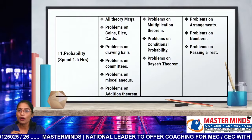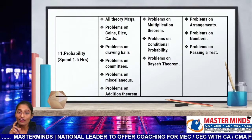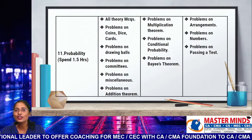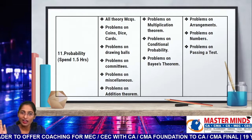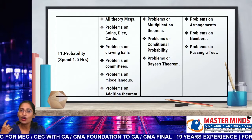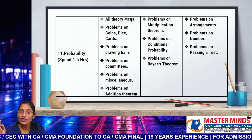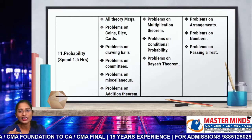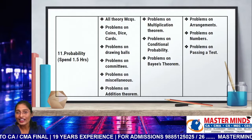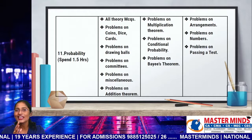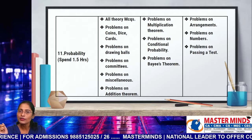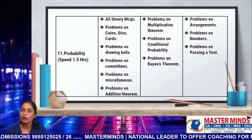The very last concept is Probability. Try to spend 1.5 hours on probability. Highest priority models: all theorem-based MCQs of probability, problems on basic questions of coins, dice, balls, cards, problems on forming committees, problems on miscellaneous, and problems on addition theorem. Second priority: problems on multiplication theorem, problems on conditional probability, and problems on Bayes' theorem. Least priority: problems on arrangements, problems on numbers, and problems on passing a test. That is all about probability.